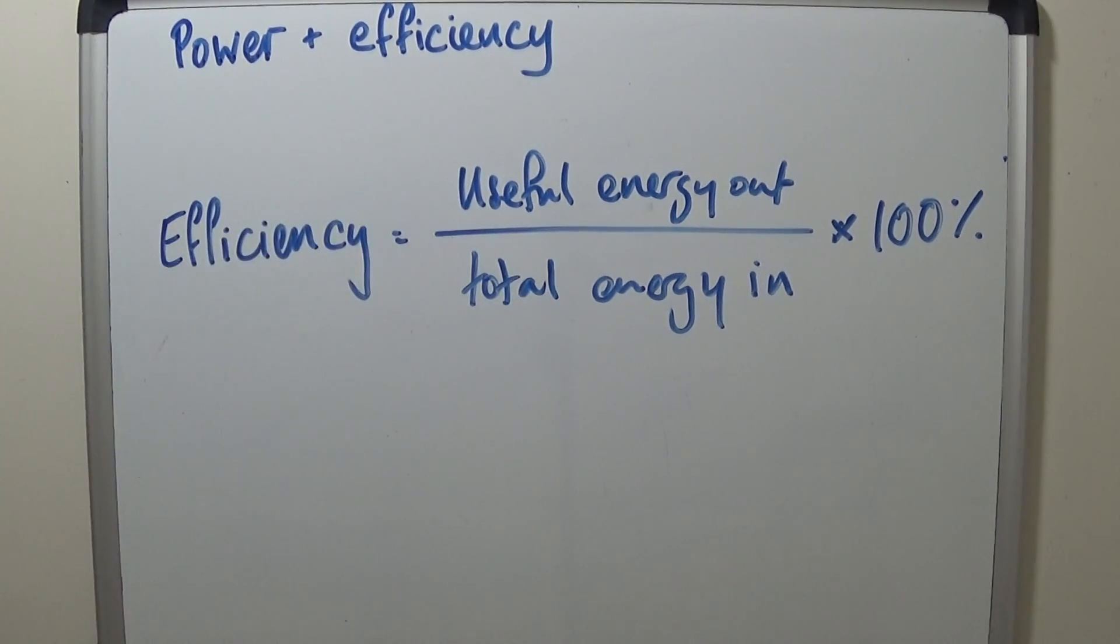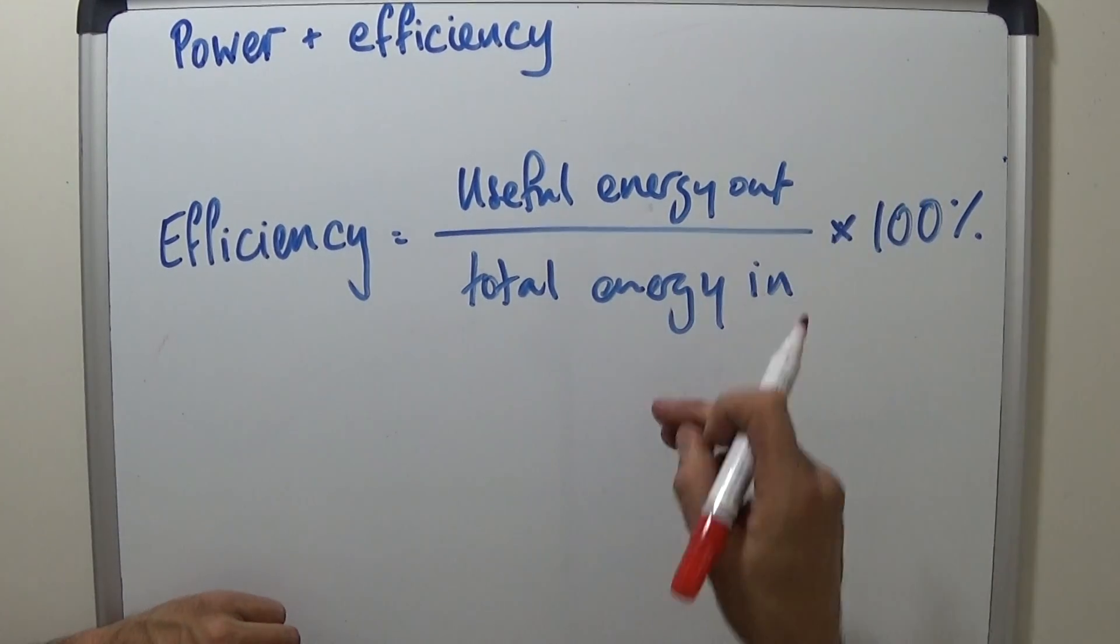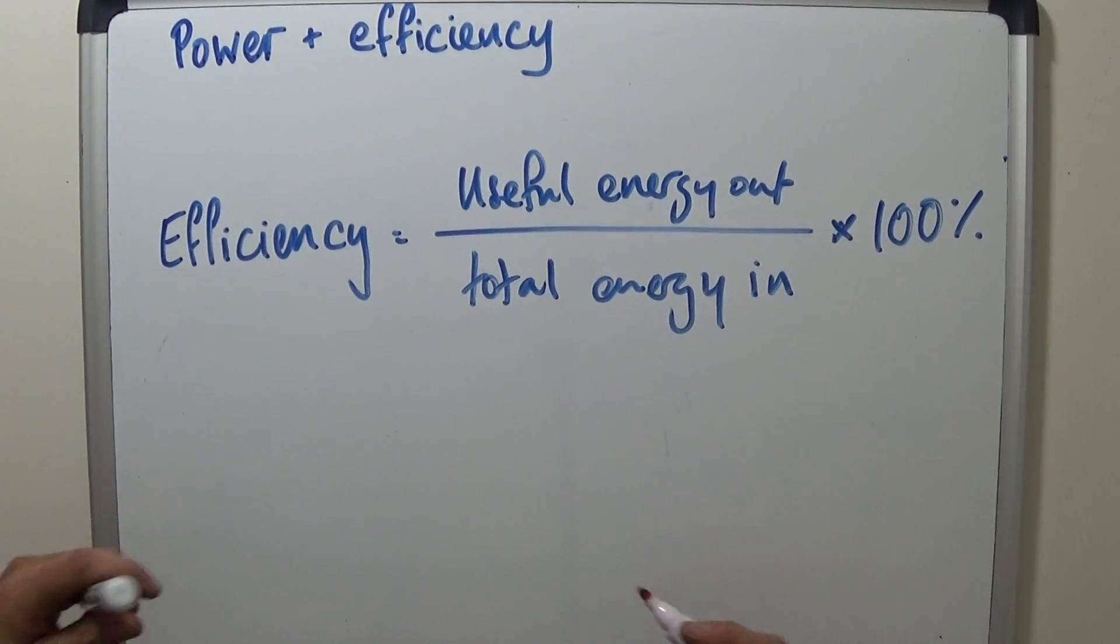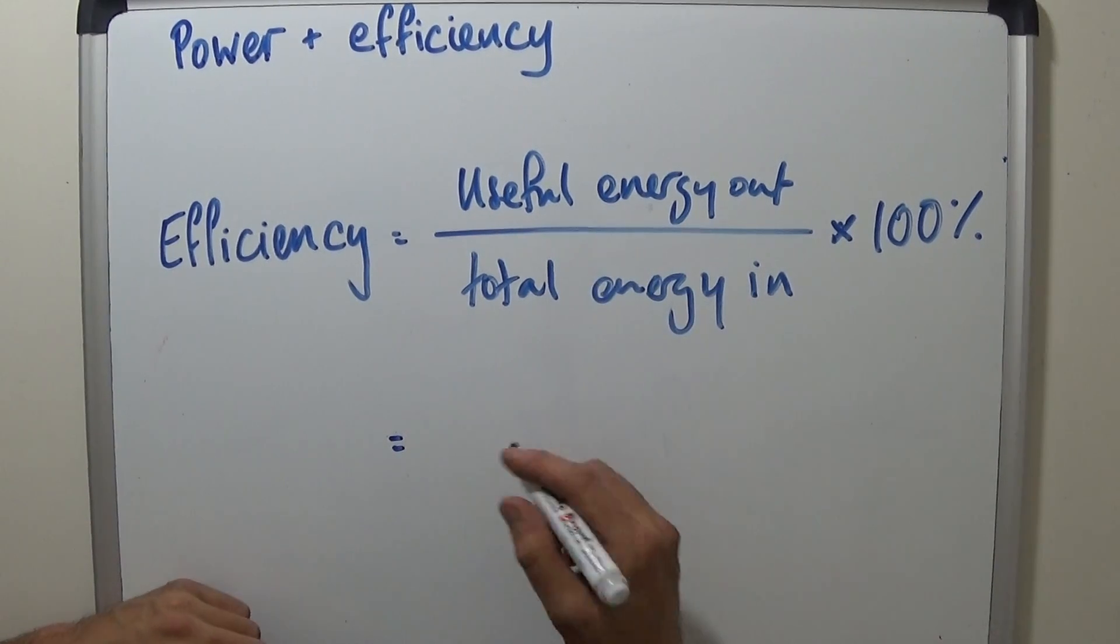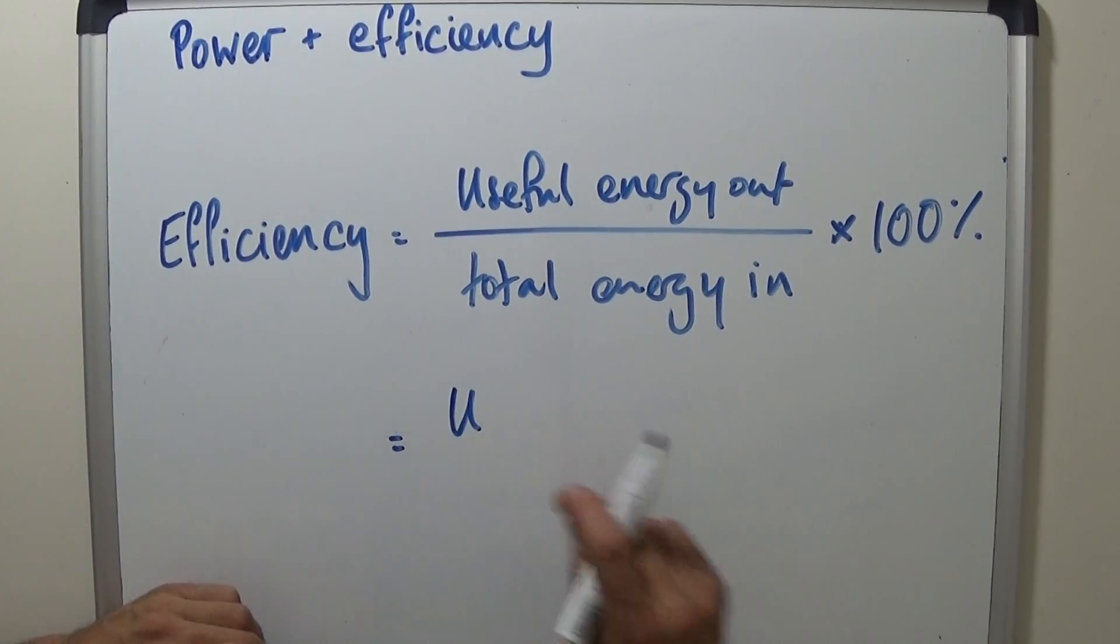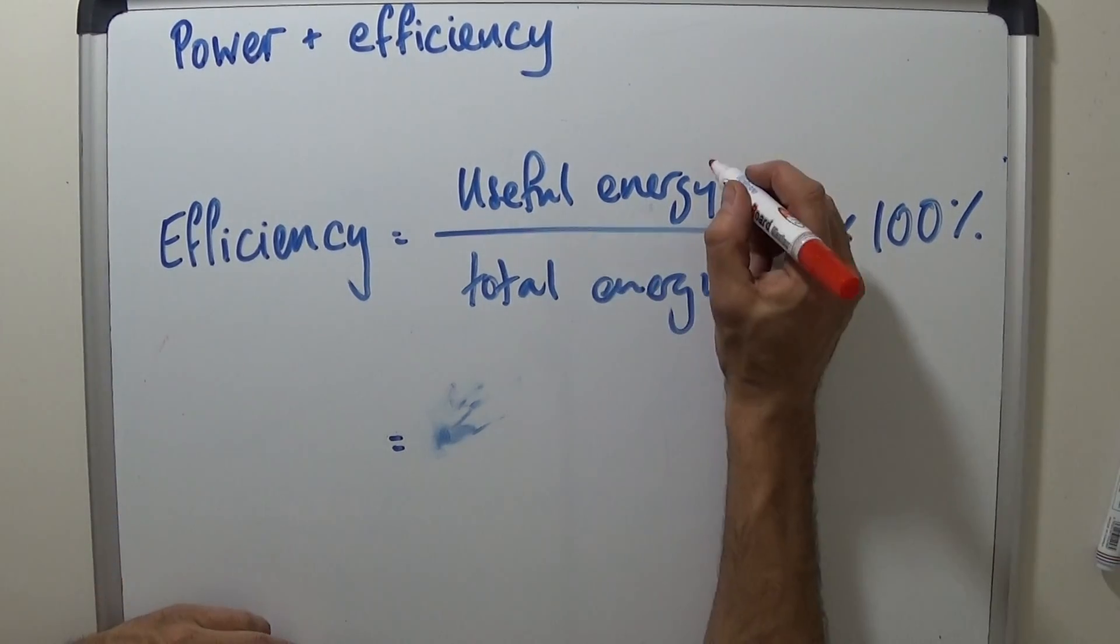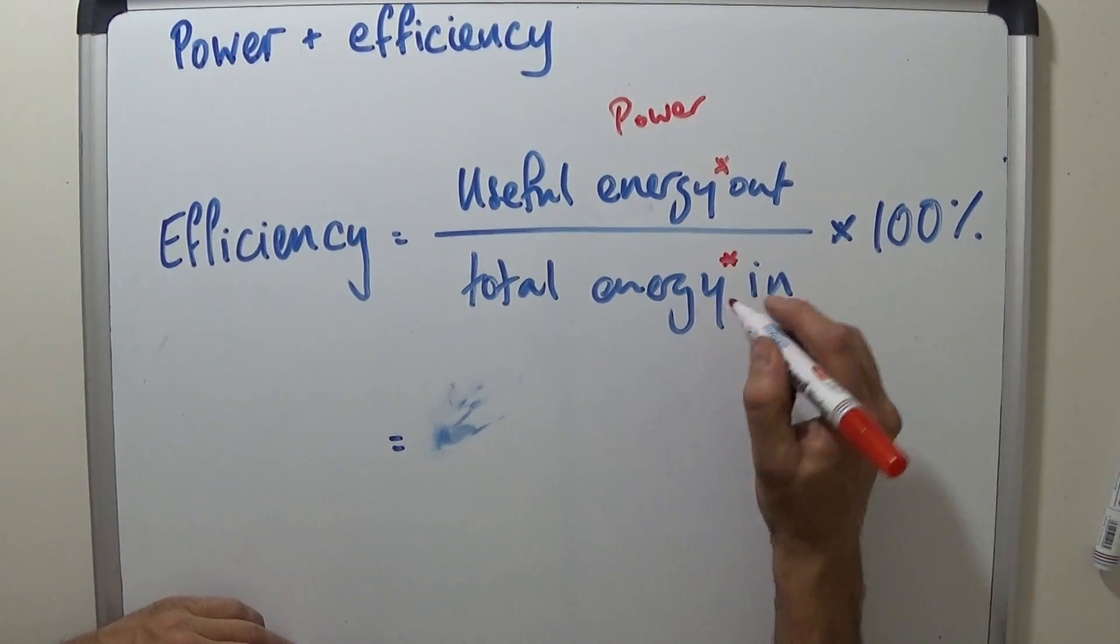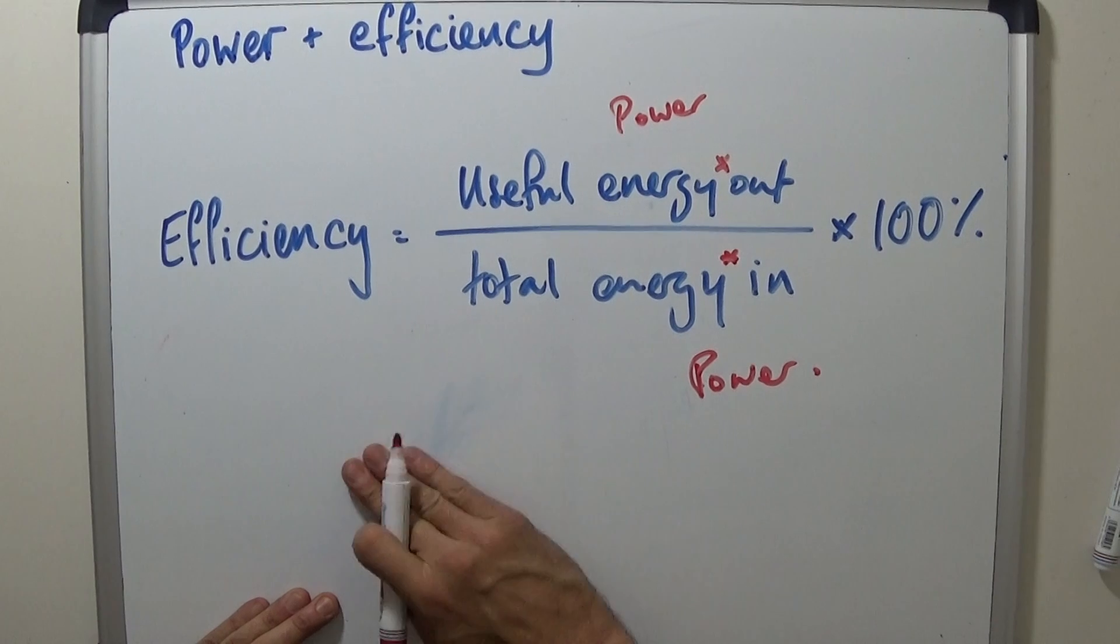Now, this of course, energy per second out and energy per second in is the same. You've got per second on the bottom and per second on the top. That cancels each other out. So it applies evenly if you're talking about the energy out or the power out. This word here could be power. And this here could also be power as well. You could switch it for power. So that's efficiency, basically.